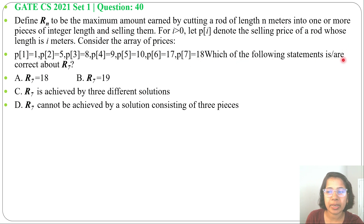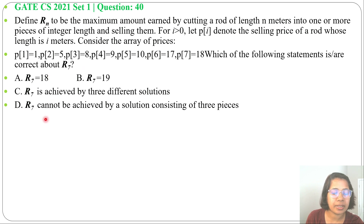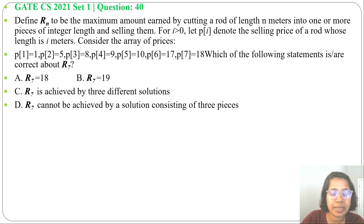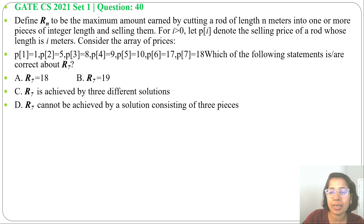Which of the following statements are correct about R7? R7 means the revenue for a 7-meter rod — what will be the maximum profit?